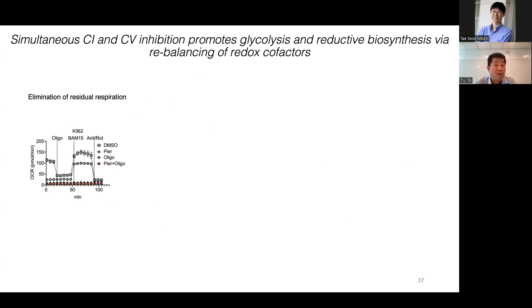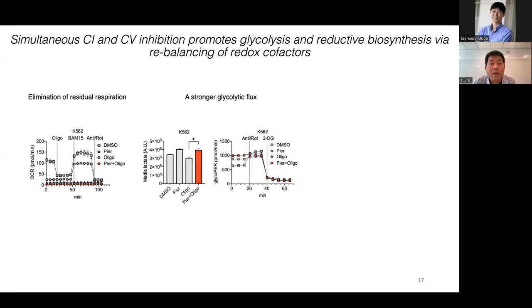So the first thing we check is whether piericidin actually changed the oxygen consumption phenotype of oligomycin. So what we find is that piericidin does not rescue the oxygen consumption. And if anything, it's actually eliminate all the residual oxygen consumption by oligomycin. So it completely shut down oxygen consumption here. And a neat thing is that we actually observe a stronger glycolytic activity in cells that are treated with both piericidin and oligomycin as compared to just oligo itself. So we actually performed this measurement in two independent assays. One is to look at media lactate level. The other is to measure extracellular acidification flux. So both of this suggests we actually have an increase in glycolysis with the combination of complex one and complex five inhibition.